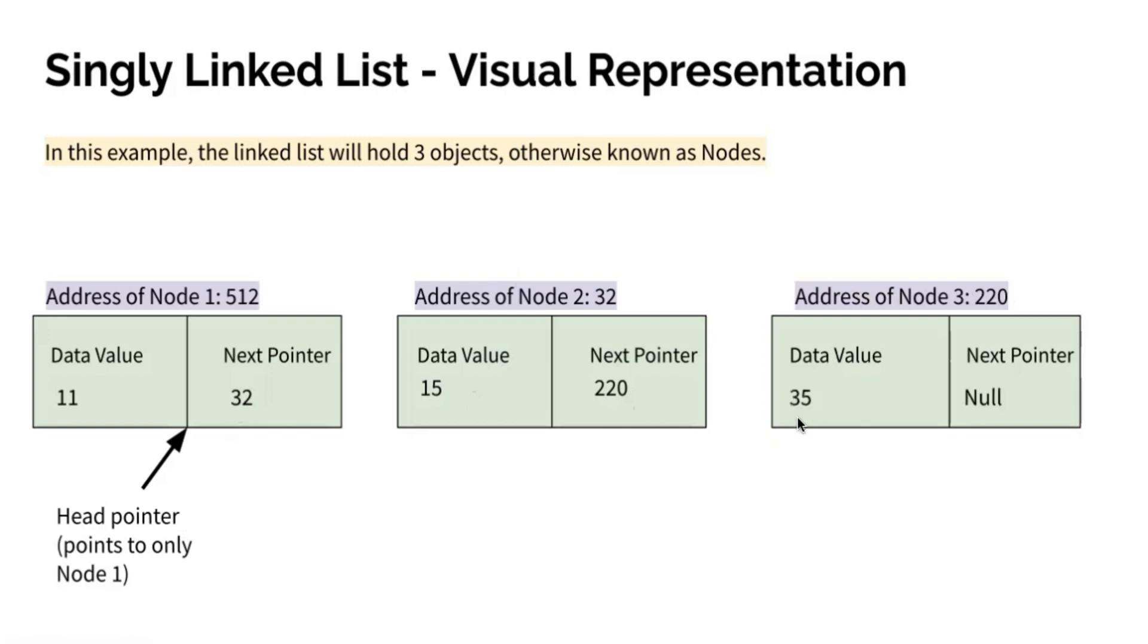Now we have a data value of 35, and now the next pointer null, because there is no other address of node four, or we do not have another node to compensate for the next pointer. Hence it will leave a value of null.